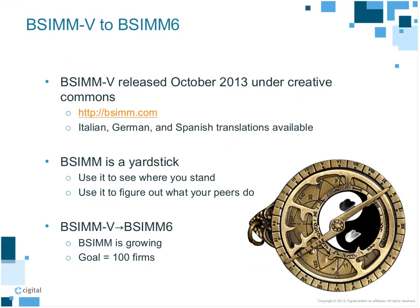Going from B-SIM 5 to B-SIM 6: B-SIM 5 was released in October 2013 and has been localized for a number of different languages. B-SIM is a yardstick — you can see where you stand and look at what your peers are doing. We're also aging some data to ensure freshness. B-SIM 5 had a data freshness threshold of 48 months; we're decreasing that to 36 months for B-SIM 6, so we're looking for firms to get re-measured to maintain accurate data.